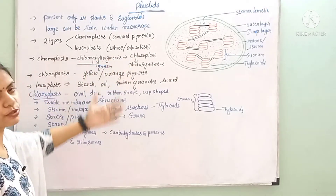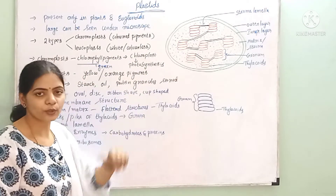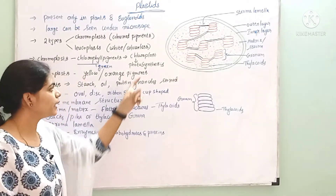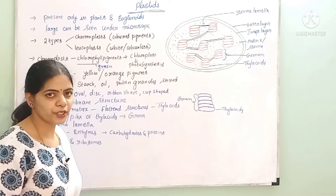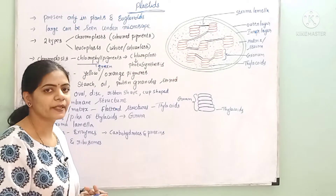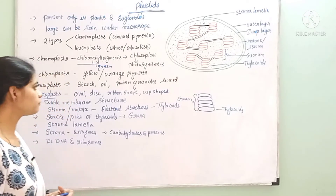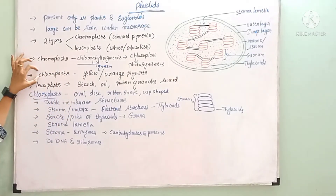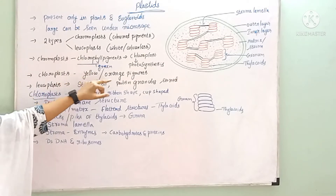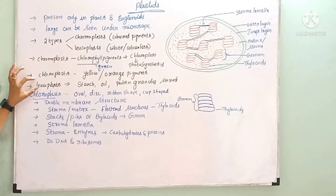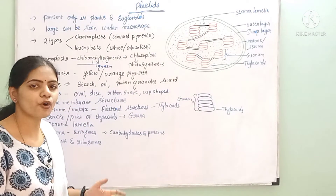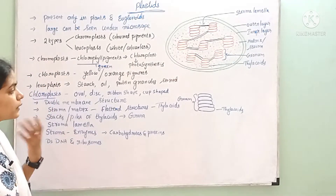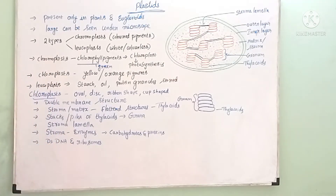The plastics with green pigment are called chloroplasts. Chromoplasts with yellow and orange pigments are also classified here. Leucoplasts are called that because they store starch, oil, and protein granules.